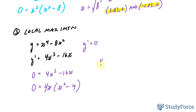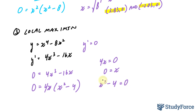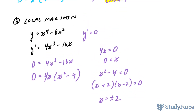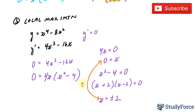Now that we have two factors, setting 4x equal to 0 gives x equals 0 — that's one critical point. For the other factor, x squared minus 4 equals 0 is a difference of squares, which factors as (x plus 2)(x minus 2), giving x equals plus or minus 2. So our critical points are x equals 0, x equals 2, and x equals negative 2. I'll label these as critical points because I'll be substituting them into y double prime.